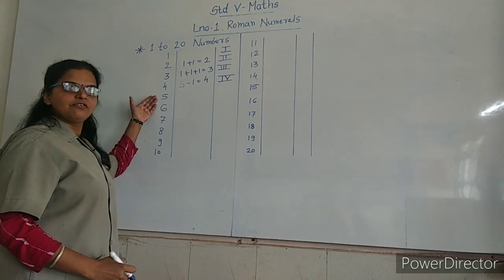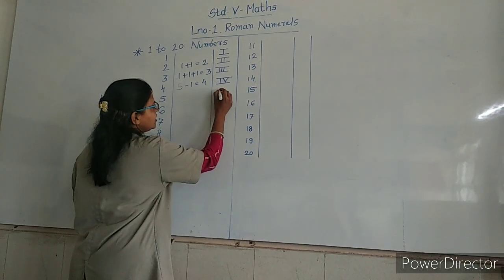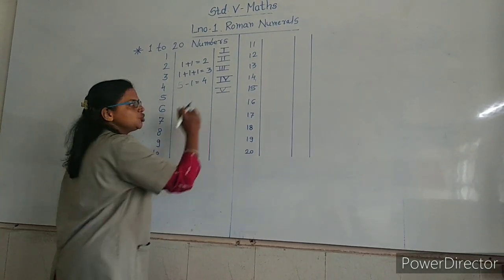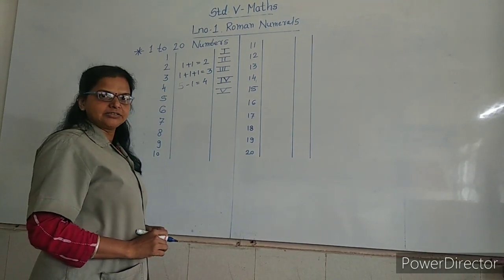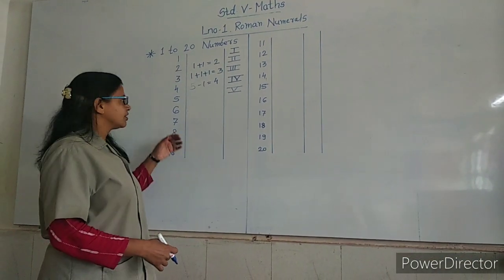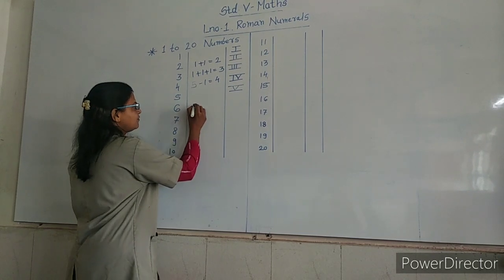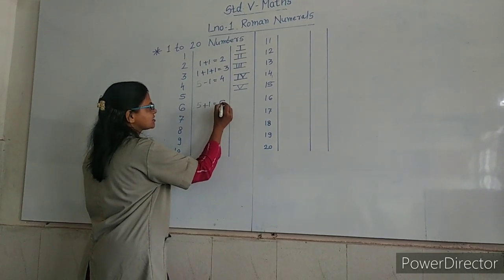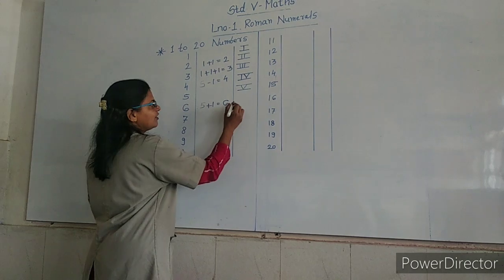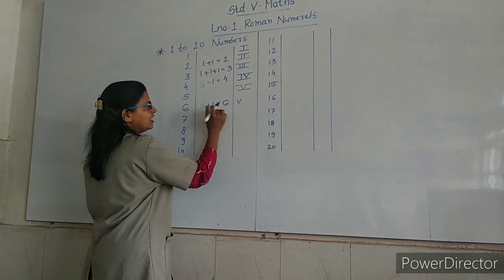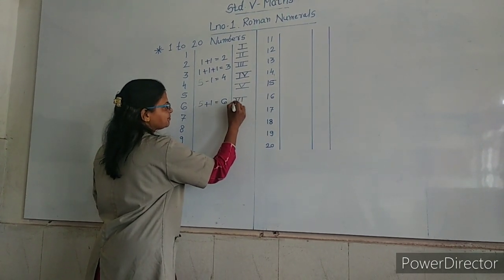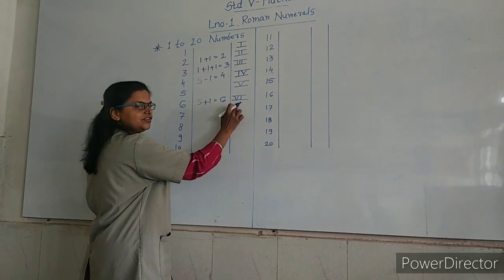Next, 5: V is the symbol used for 5. 6: 5 plus 1 is equal to 6. 5 is V, 1 is I, so 6 is VI.